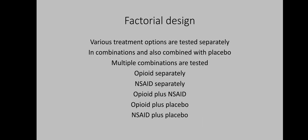Another design in randomized control trials is the factorial design, where various treatment options are tested separately and in combinations, and treatment options are also combined with placebo. For example, in an RCT on the effects of an opioid analgesic and an NSAID drug, the opioids will be tested separately, the NSAIDs will be tested separately, and then combinations — opioid plus NSAID, opioid plus placebo, and NSAID plus placebo — will be tested and the results analyzed.